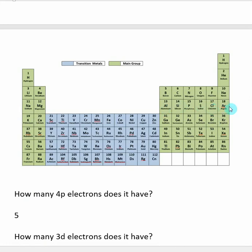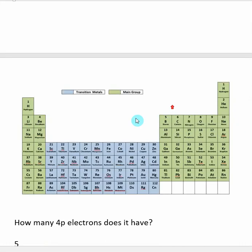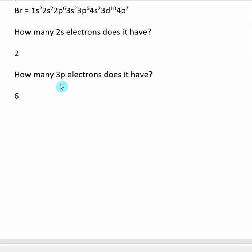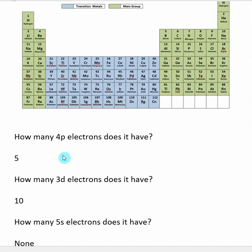This is our 3p subshell, so we need to completely fill it to get to bromine, so we know that there are 3p electrons inside of bromine.